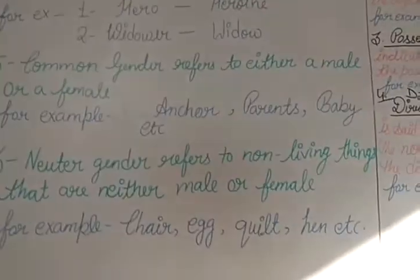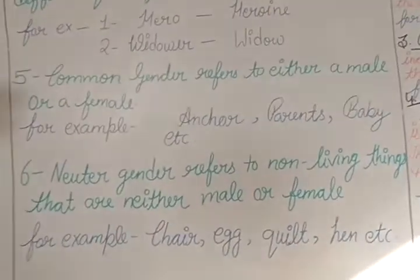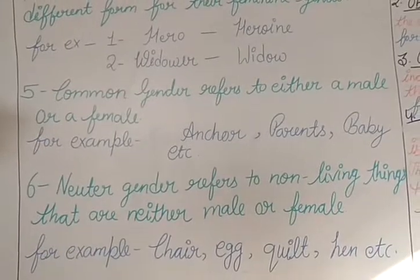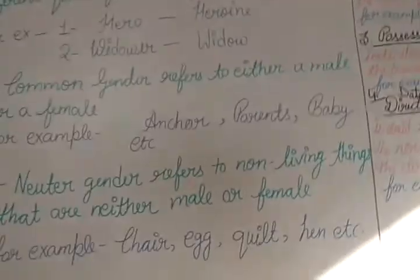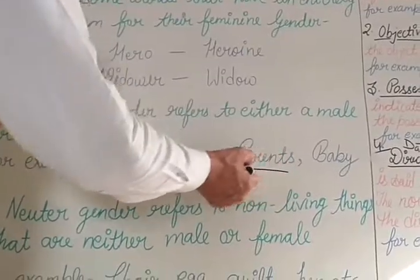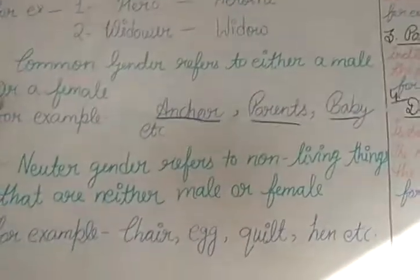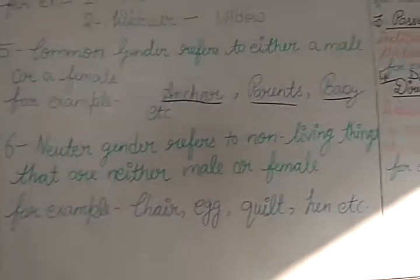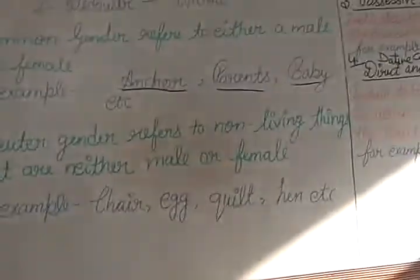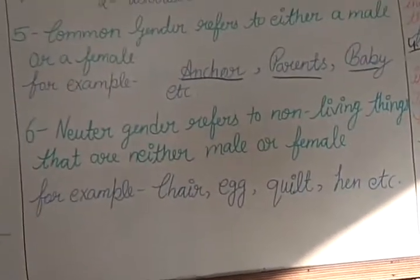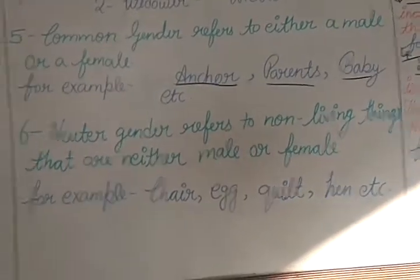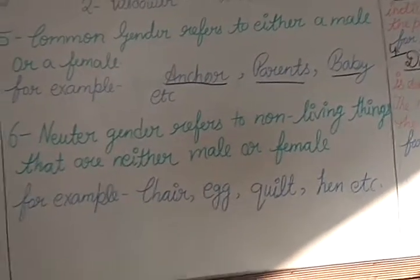We also form feminine gender. There are words which are common, like anchor, parents, baby — these are common gender. Neuter gender refers to non-living things that are neither male nor female: chair, table, egg, quilt.